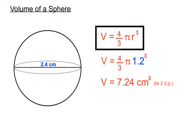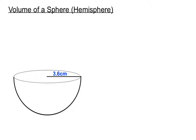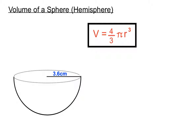Those were examples where we had a full sphere. Let's have a look at one where we've got a hemisphere. A hemisphere is exactly half a sphere — it's like we've chopped that ball straight across the middle through the center. We've still got a radius for the hemisphere. We're going to pretend it's a full sphere, work out the volume of a full sphere, and then halve it at the end. There's our volume formula for a full sphere.